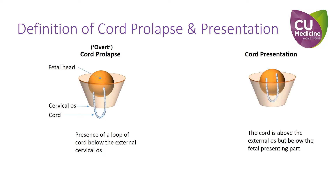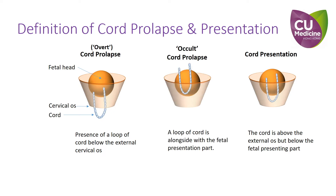When the cord is above the external os but below the fetal presenting part, it is called cord presentation. Another commonly used term is occult cord prolapse, which usually means that a loop of cord is alongside the fetal presenting part. The term occult is used as the cord is neither outside nor at the cervical os, meaning the condition is not readily identifiable.